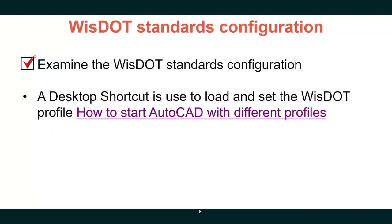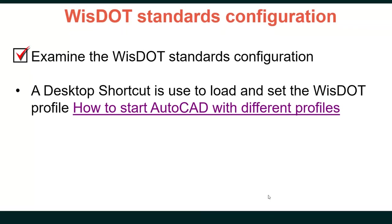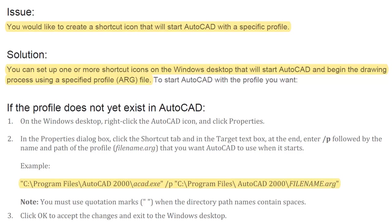You can set up one or more shortcut icons on a Windows desktop that will start AutoCAD and Civil 3D using a specified profile ARG file. An ARG file is a settings profile that has been exported from Civil 3D with a .ARG extension. In the target text box of the shortcut's properties, we put a "-P" switch that tells the shortcut to start a specific profile.